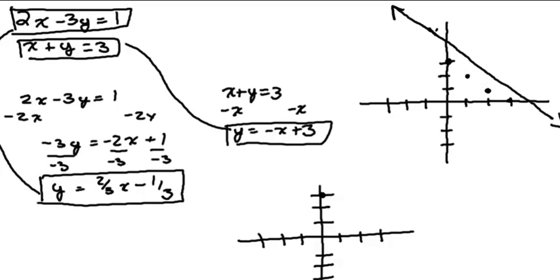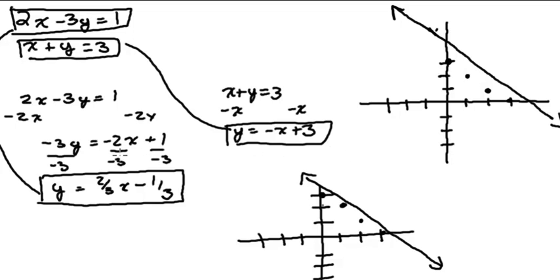So starting fresh — y-intercept of 3, slope of negative 1: down 1, over 1, down 1, over 1, down 1, over 1. There's our first line. Now for the second equation, we have a y-intercept of negative one-third and a slope of two-thirds, so we go up 2 and over 3. That gives us the second line.